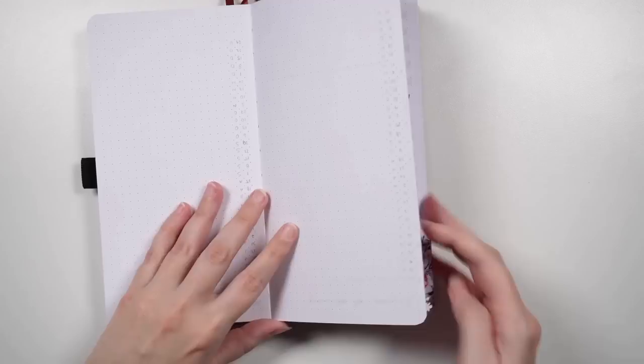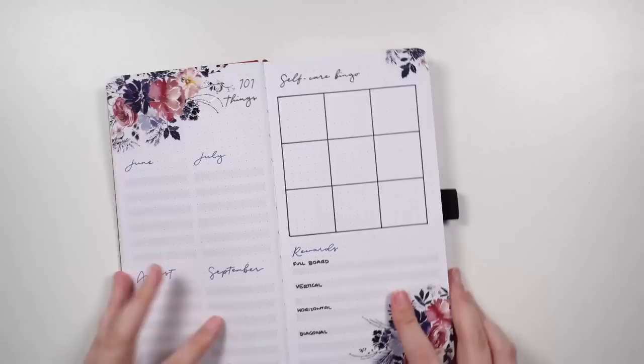Even though it's over three months, I have just opted in to do a three-by-three bingo board rather than anything bigger, so that's going to be nine meaningful self-care tasks that I'm doing for myself in that period of time. Possibly roughly three a month. We'll see how it goes.